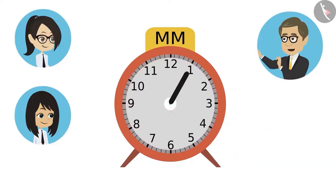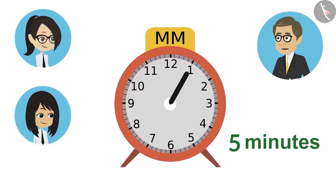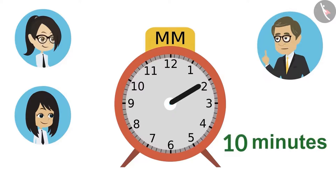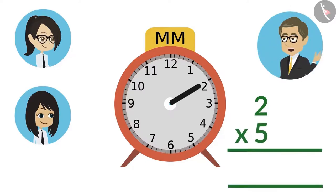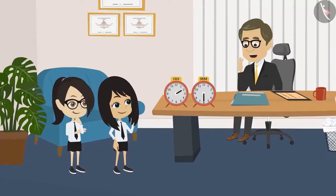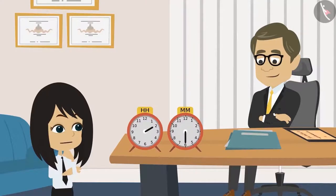When the minute hand is on one, then it is said to be five minutes. The same way, when the hand is on two, then it means ten minutes have passed. Meaning, multiplying the number where the minute hand is with five will tell us how many minutes have passed. Got it, Neha? Yes, Sir. I will try.